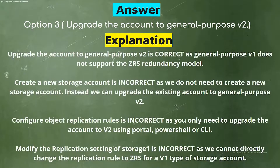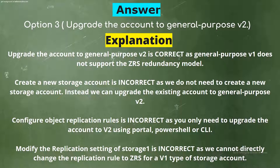Explanation: Upgrading the account to general purpose V2 is correct, as general purpose V1 does not support the ZRS redundancy model. Creating a new storage account is incorrect — we can upgrade the existing account to general purpose V2 instead. Configuring object replication rules is incorrect, as you only need to upgrade the account to V2 using the Portal, PowerShell, or CLI. Modifying the replication setting of Storage1 is incorrect, as we cannot change the replication rule to ZRS for a V1 type storage account.